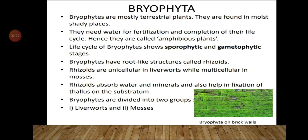Bryophytes need water for fertilization and completion of their life cycle. Since they are terrestrial plants that live on land, but require water for fertilization, they are called amphibious plants. Just as amphibious animals live on land as well as in water, these plants live on land but need water for fertilization, so they are known as amphibious plants.